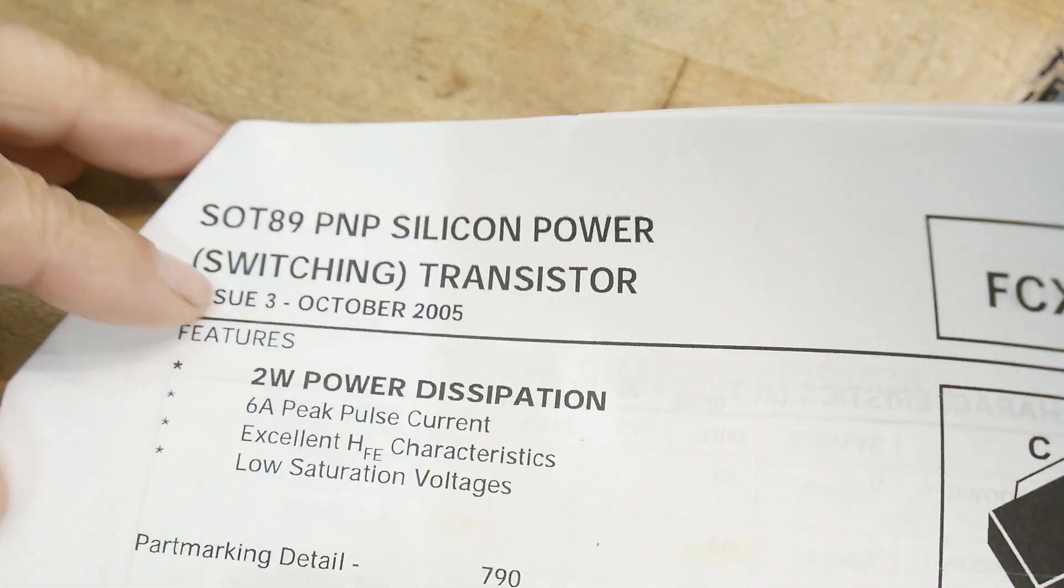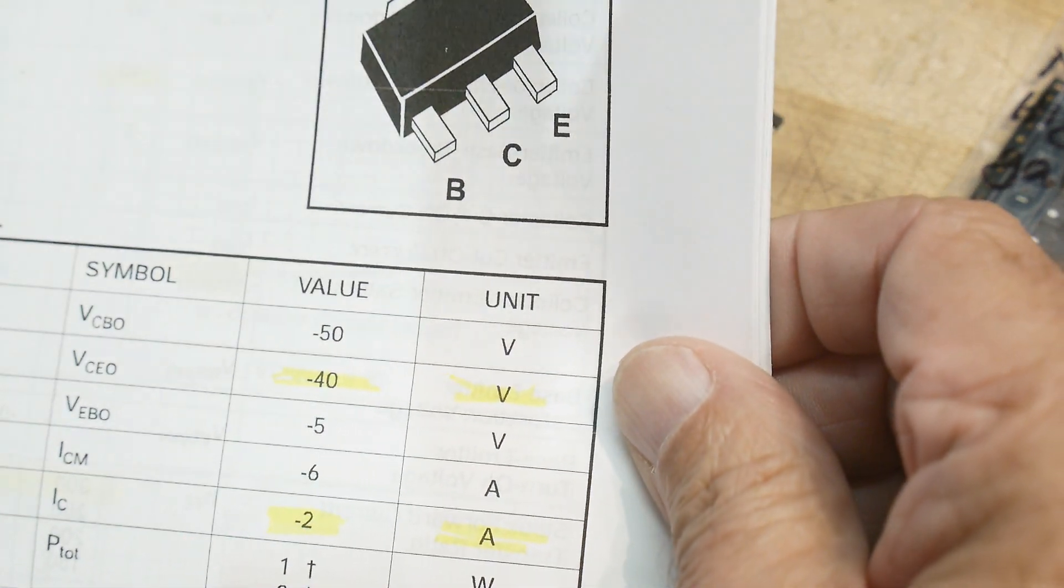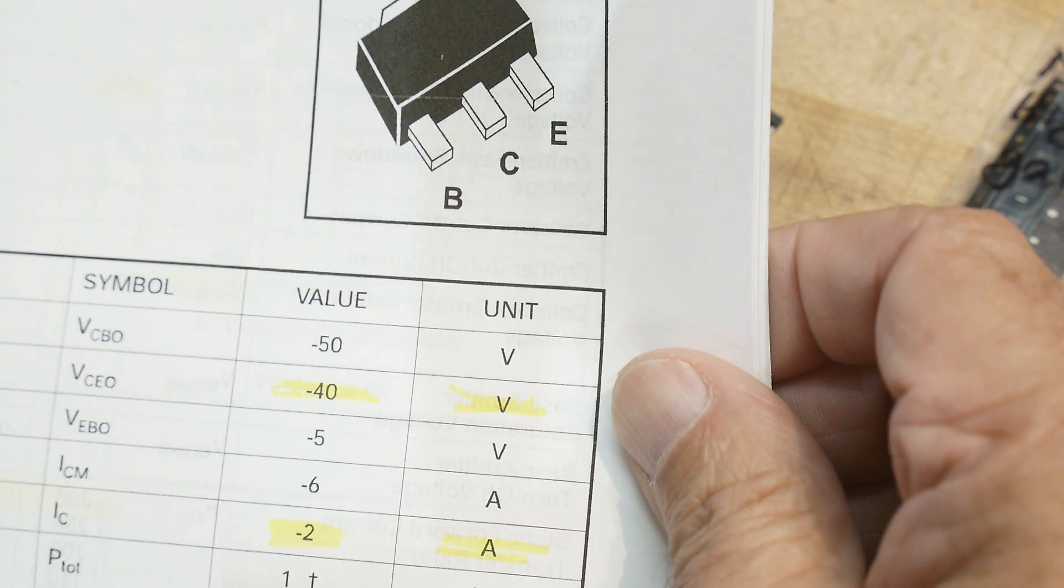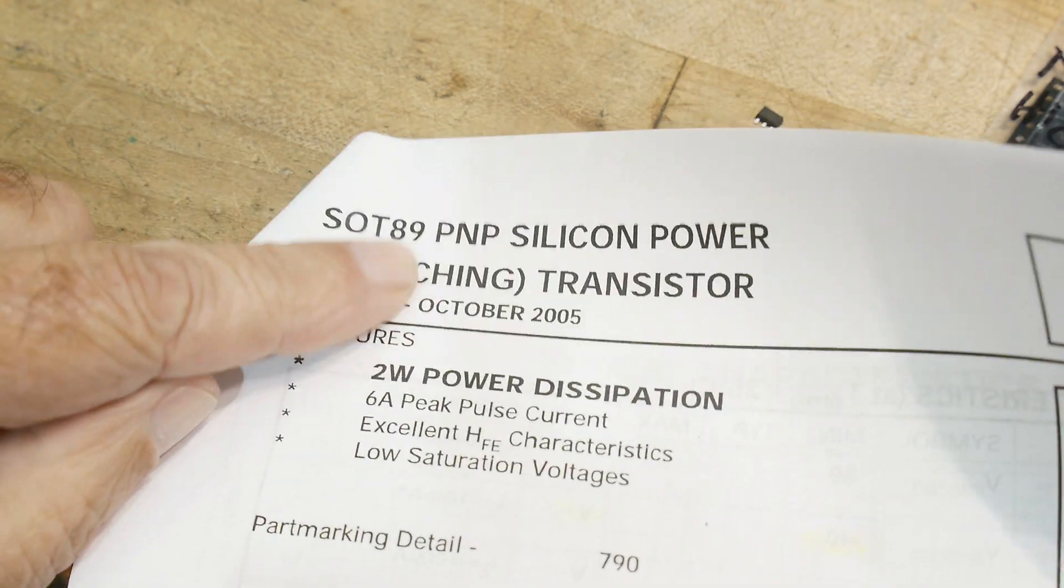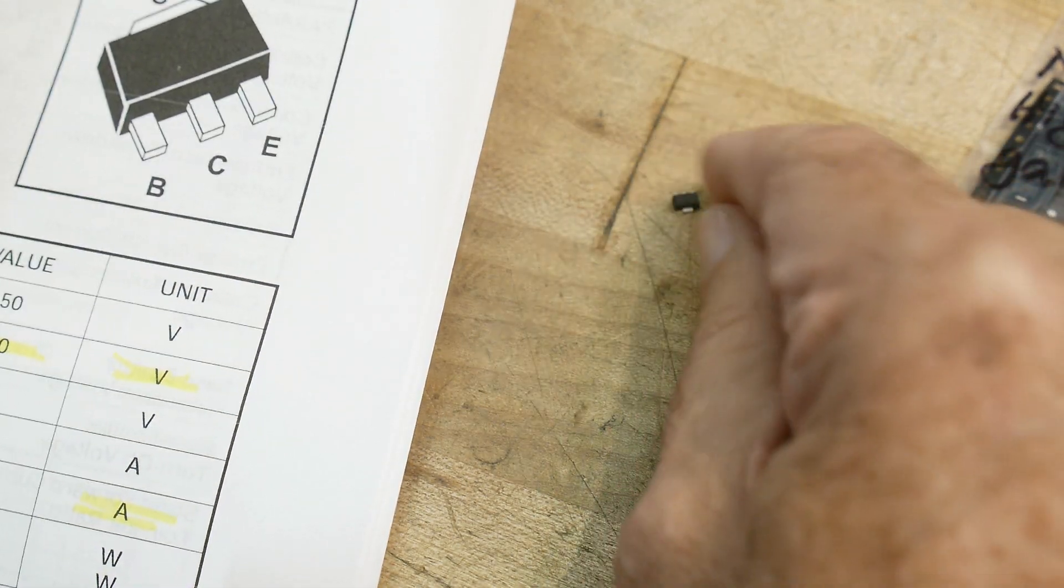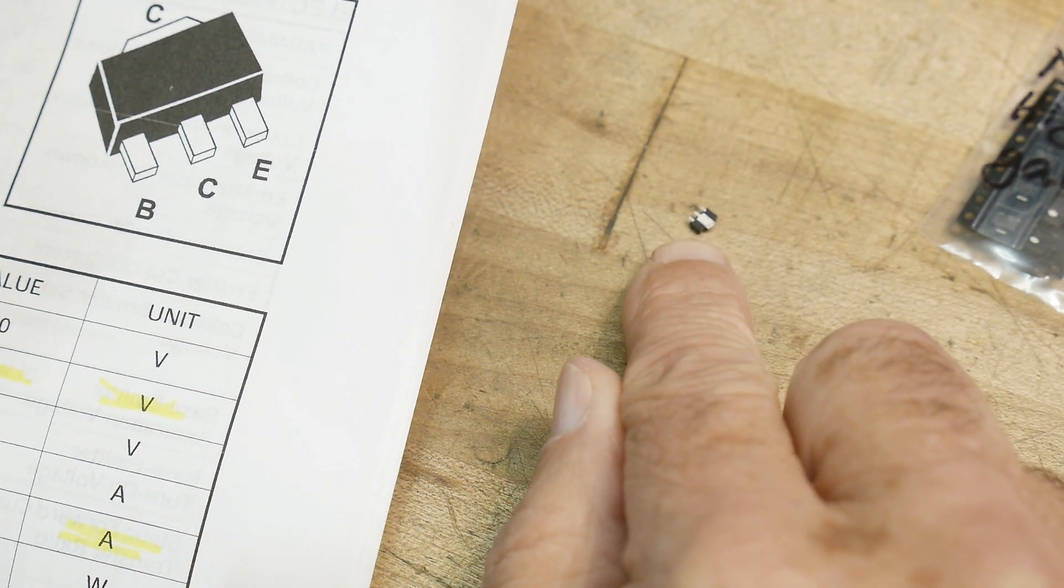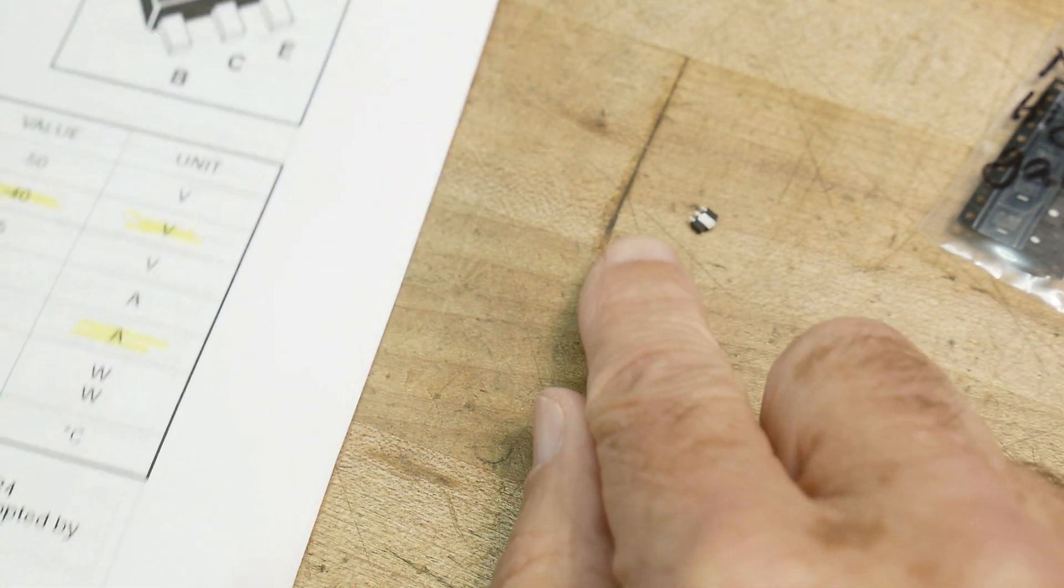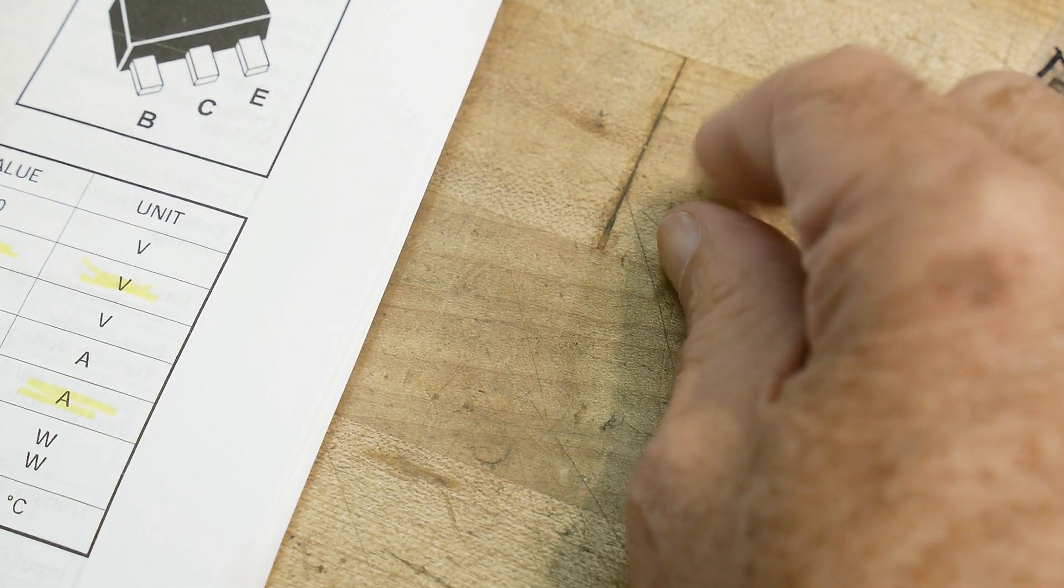Yeah, so it's these little funny packages. This is a, what kind of package is this? I don't remember what these are called. Oh there we go, SOT89. Yeah, it's kind of strange, it's kind of like an SO3 but it's got like a big tab at the end for heat. You'd flip it over, you can see that there's a large tab on it. It does connect to the center pin though, so that's the collector.